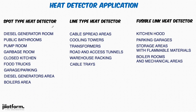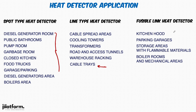The applications of each heat detector type are as follows: the spot type is suitable for the previously mentioned rooms. The line type heat detector is suitable for cable spread areas, cooling towers, transformers, road and access tunnels where spot detectors cannot be installed, and warehouse racking, cable trays, and underground areas. The fusible link heat detector can be installed in kitchen hoods — as in fire suppression kitchen hood systems.